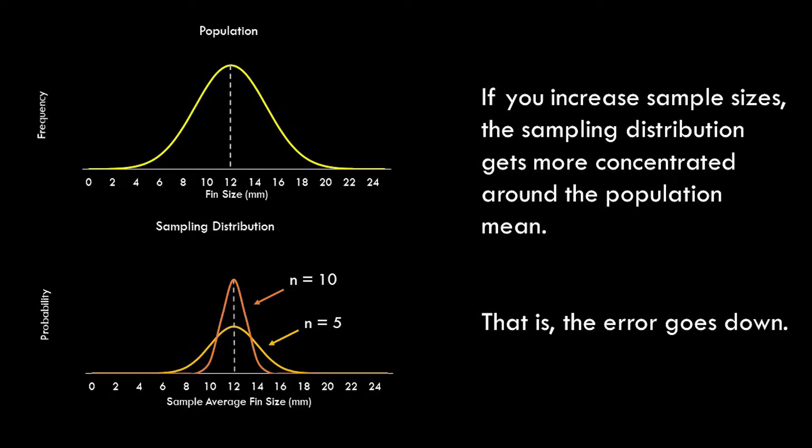What would happen if we increased our sample size from 5 to 10? You can see the sampling distribution for a sample size of 5 — that's the same one we were looking at before. If we increase the sample size to 10, notice that it gets narrower and more concentrated around the population mean. In other words, as sample size increased, error went down. I should note, however, that the benefit of adding participants goes down as sample size gets larger. Increasing from 10 to 11 — by just 1 — gives a substantial benefit. However, increasing from 100 to 101, even though it's still the same number of participants added, we get less benefit from each one. This is similar to diminishing returns in economics.